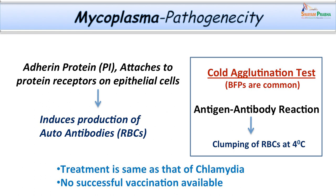Mycoplasma infections can also be diagnosed by other means. We can grow them, though growth is quite tedious and complex. Serological and molecular methods can also be used for diagnosis. The treatment is almost similar to Chlamydia — they can be treated with azithromycin. Until now, no successful vaccination has been developed against Mycoplasma infections.